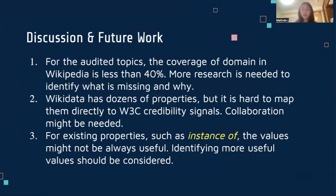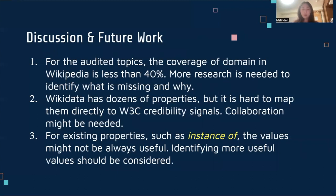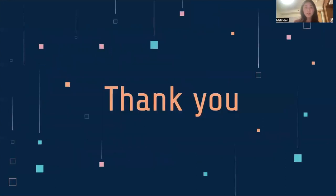In general, we conclude that for the audited topics, the coverage of domains in Wikipedia is less than 40%, which means that more research should be done to identify what is missing and why. In addition, we discovered that Wikidata has a number of properties; however, it's difficult to map them directly to W3C credibility signals, and future collaboration between the platforms should be needed. And last but not least, for existing properties such as 'instance of,' the values are not always useful. Therefore, identifying more useful property values to include on Wikidata should be considered. Thank you for your attention. I will be happy to answer any questions you might have.